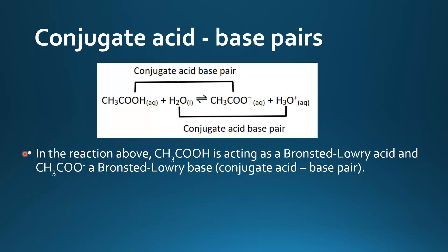In the reaction above, ethanoic acid is acting as a Brønsted-Lowry acid and the ethanoate ion is acting as a Brønsted-Lowry base by accepting the proton from the hydronium ion. So they are known as a conjugate acid-base pair. The water is accepting a proton from the ethanoic acid and on the other side it's donating a proton to the ethanoate ion, so that's also another conjugate acid-base pair.